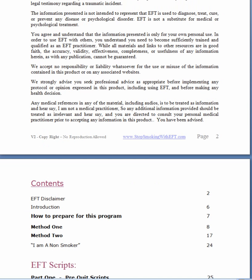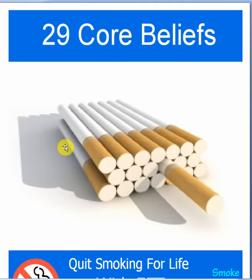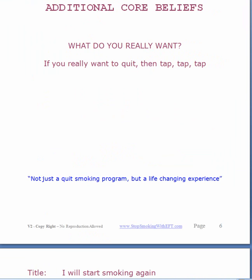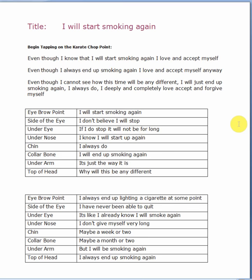I'm going to open up the other guide so you can see what I'm talking about. Here we have the 29 Core Beliefs Guide, which covers 29 core beliefs — the reasons we return to smoking. This script here is all about the fear or belief that you're going to start smoking again anyway, that nothing's going to work and you're not going to be able to quit. That's a core belief — a belief that many of us have, because anyone that's smoked and tried to give up knows that feeling.